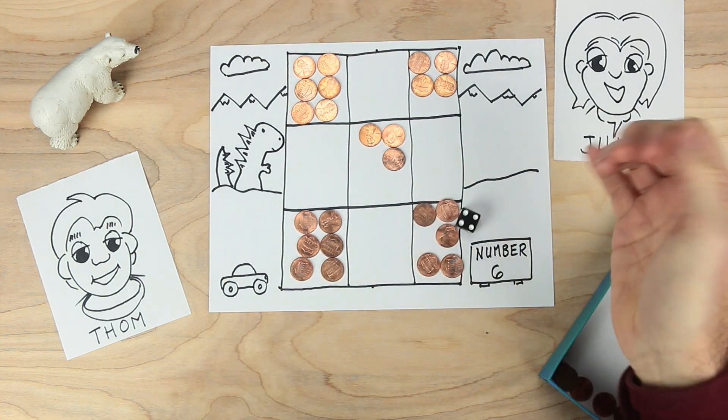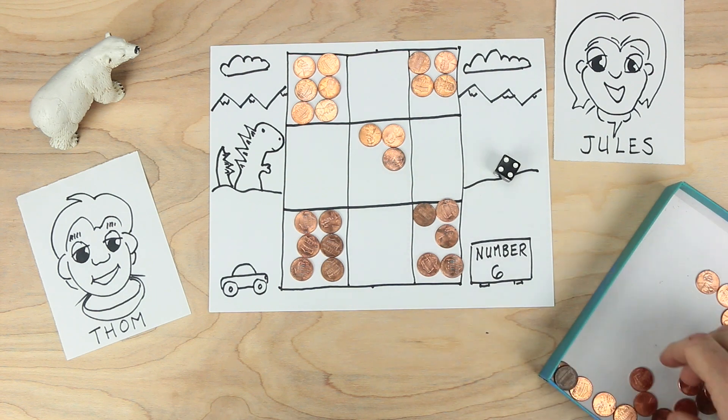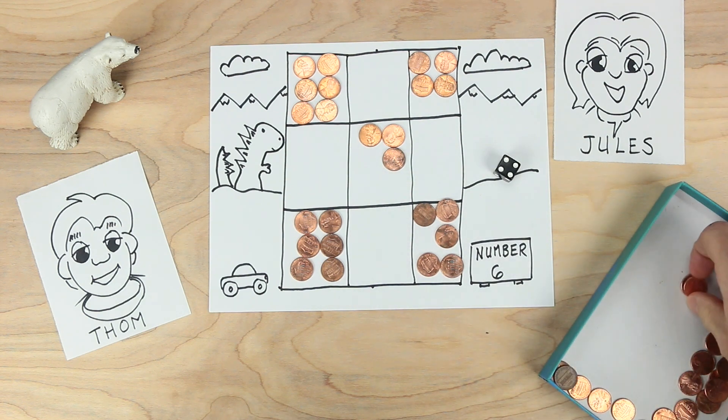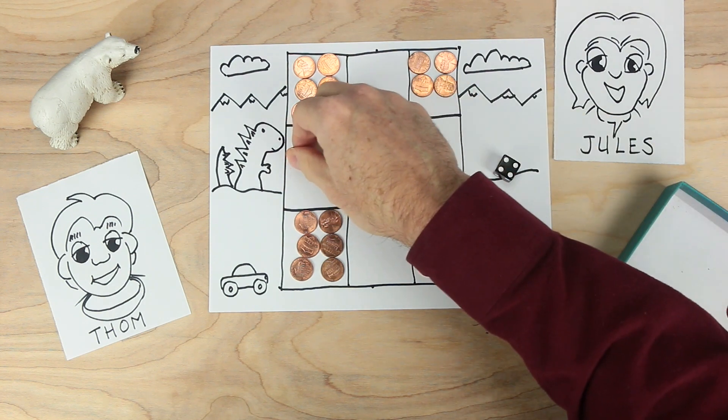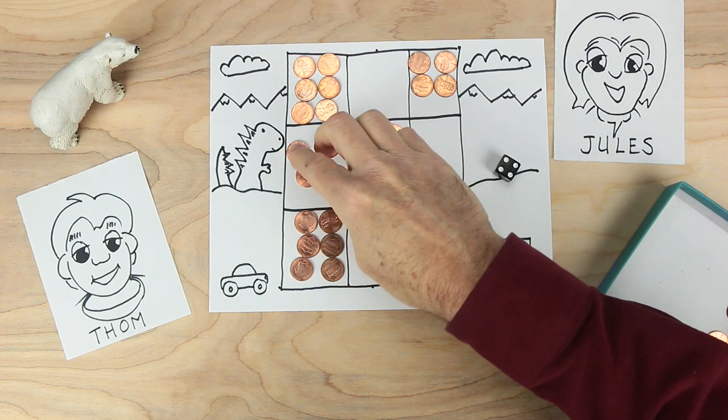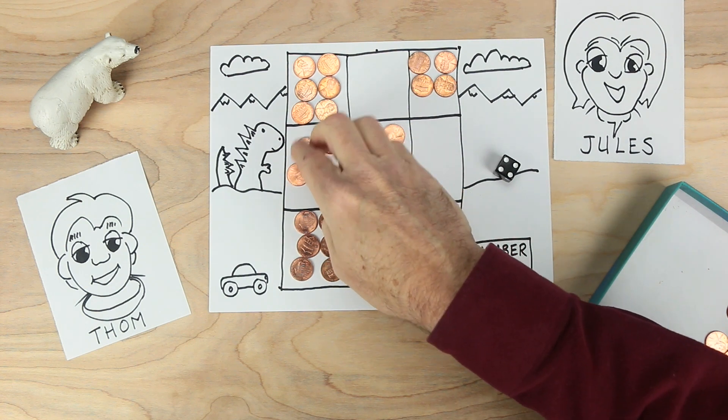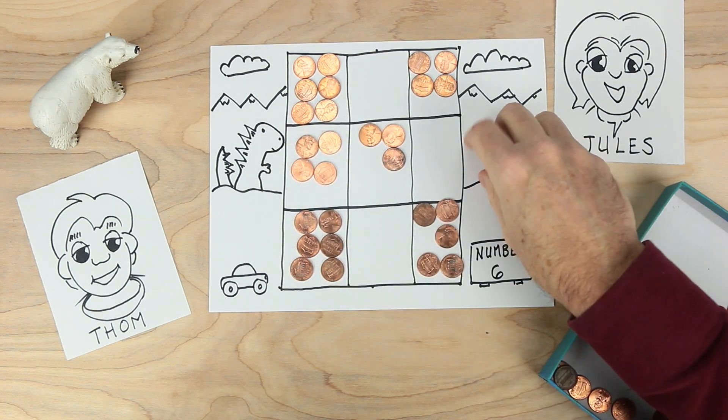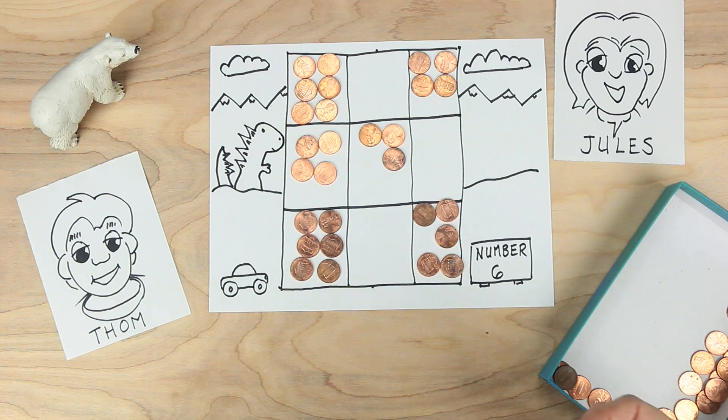Tom's turn. Tom rolls a four. And four can only go in an empty box right now. So Tom decides to put four coins right here. Now that's a dangerous move because if Jules rolls a certain number, she might get three in a row. Jules rolls a four.